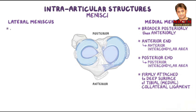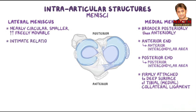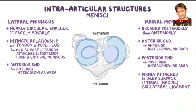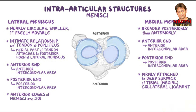The lateral meniscus is nearly circular, smaller, and more freely movable than the medial meniscus. It also has an intimate relationship with the tendon of the popliteus, whose medial part attaches to the posterior horn of the lateral meniscus. Its anterior end is attached to the anterior intercondylar area of the tibia, and its posterior end to the posterior intercondylar area. The anterior edges of the menisci are joined by the transverse ligament of the knee.